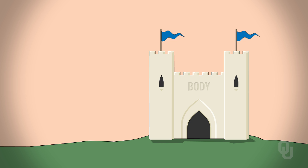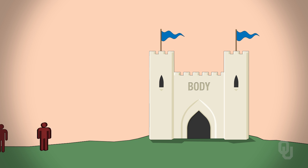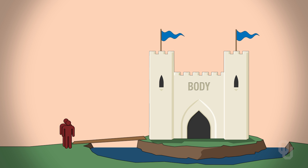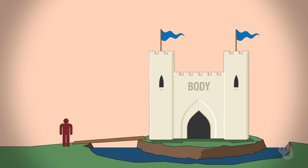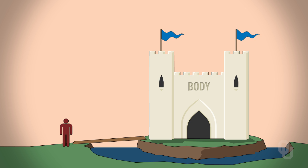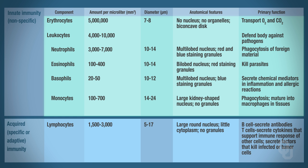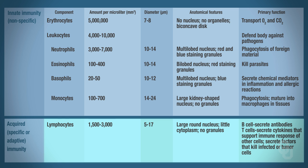Here's our analogy: the castle is the body. The first thing the innate response wants to do is prevent invaders from entering. Once an invader gets in, the innate response has other methods for killing them — all while the acquired response is just getting started, since it's slow. Neutrophils, eosinophils, basophils, and monocytes are all cells important in the innate response, while lymphocytes are the white blood cells important in the acquired response.